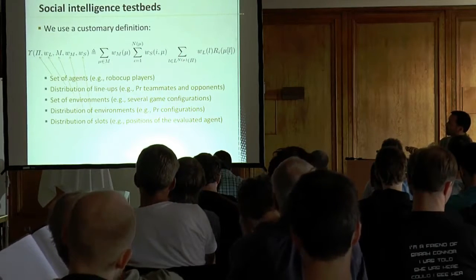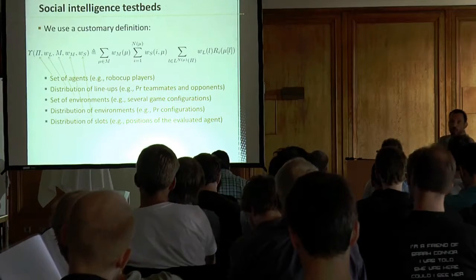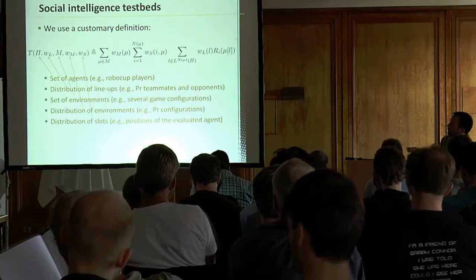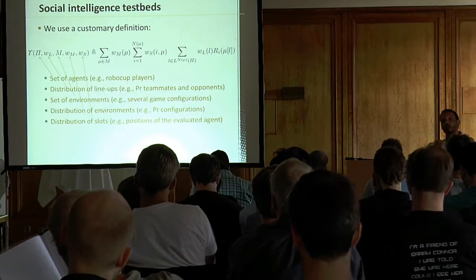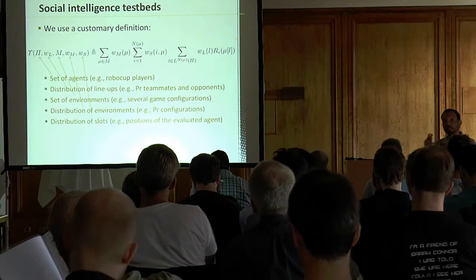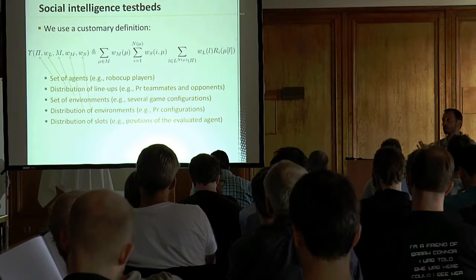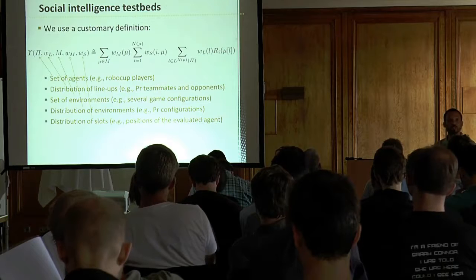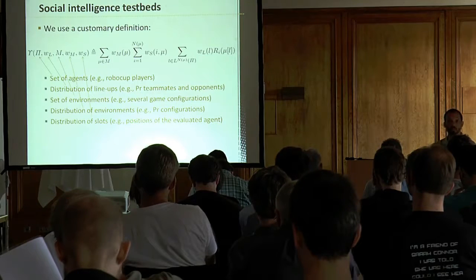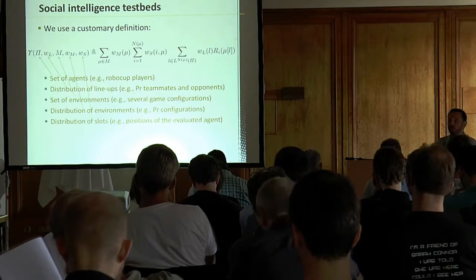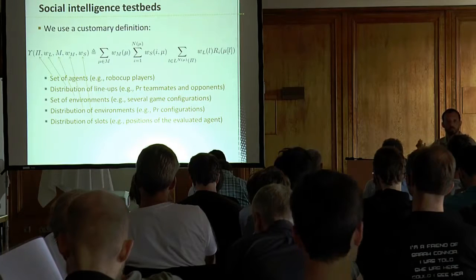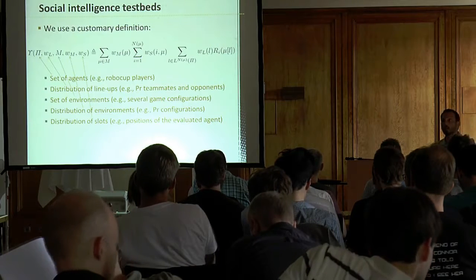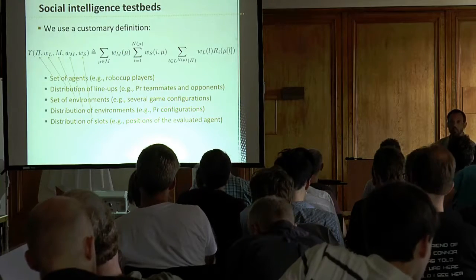We started with a definition involving a sum over many distributions: a set of agents with a distribution, a set of environments with a distribution, and a distribution of slots — where each player is placed. With the same players and the same game but changing positions, you can get different results. You may also want to give a probability distribution to these possibilities — for example, should a goalkeeper play as a midfield player?